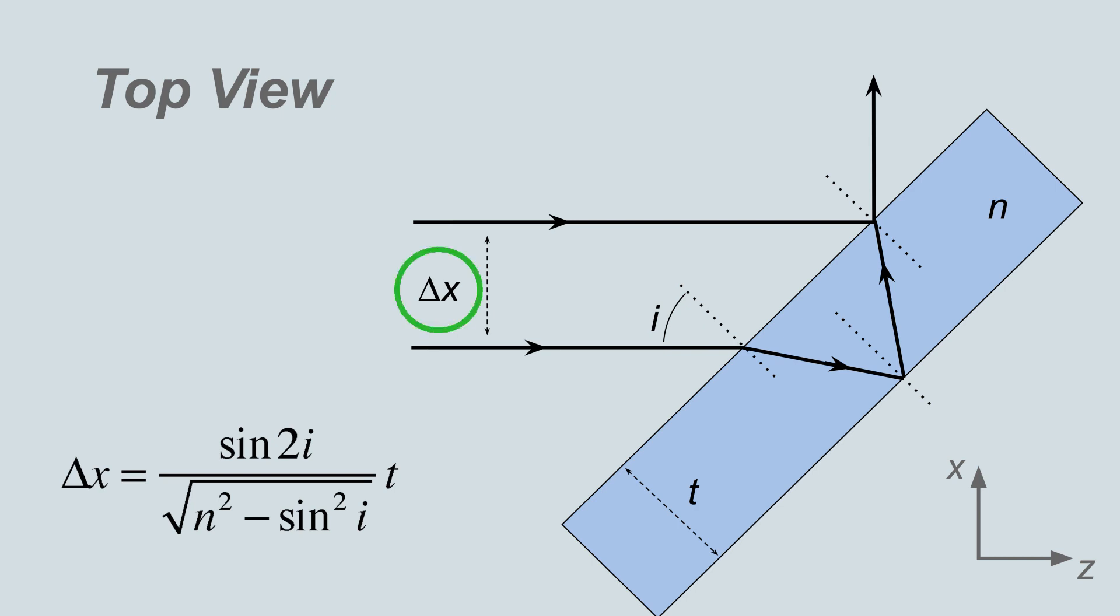The beam shear delta x depends on the plate thickness t, index of refraction n, and the angle of incidence i.